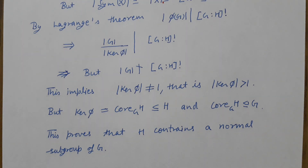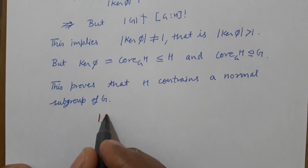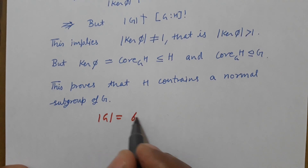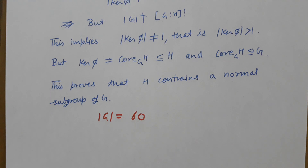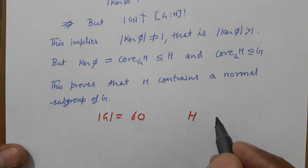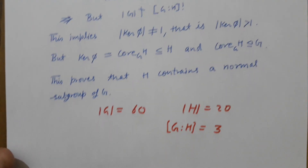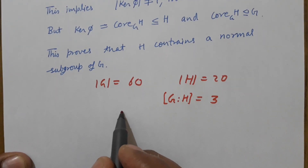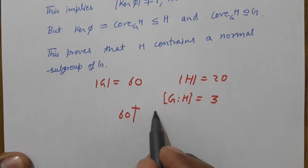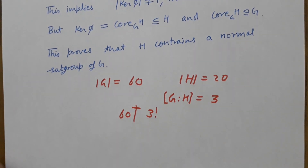For example, suppose we have a group G of order 60, and H is a subgroup of order 20. The index of H in G is 3. You can see that 60 does not divide 3 factorial, which is 6. So by the Index Theorem, this order-20 subgroup must contain a non-trivial normal subgroup of G.